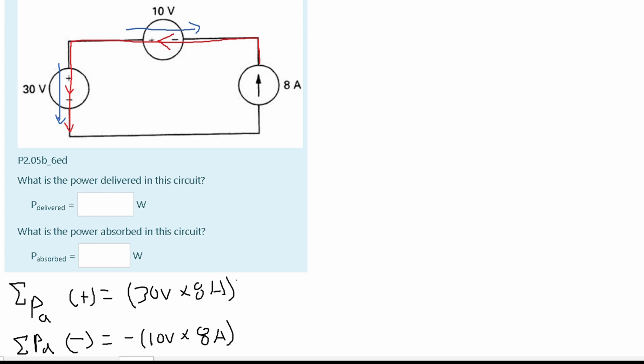Now if we do 30 volts times 8 amps, this is going to give us 240 watts. If we do the same thing down here where we have 10 times 8, this is going to give us a negative 80 watts. Well, these have to be equal to be the perfect circuit for this problem to actually make sense. So what we're missing here,